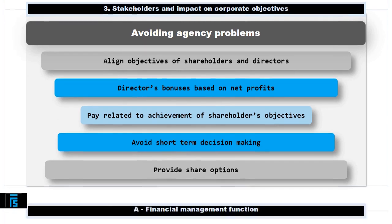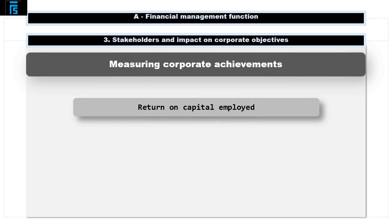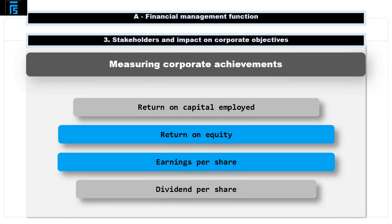Measuring corporate achievements. The main objective of most organisations is to maximise shareholders' wealth. The directors need to put a plan in place and targets to chart the progress of the organisation. Progress and achievements are measured by looking at the following ratios: return on capital employed, return on equity, earnings per share, and dividends per share. You should already be familiar with some of these ratios. Please refer back to F3 ratios if you want a quick refresher.